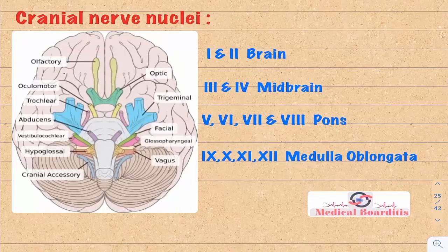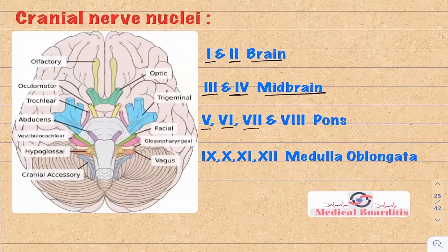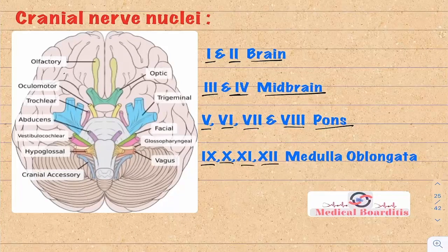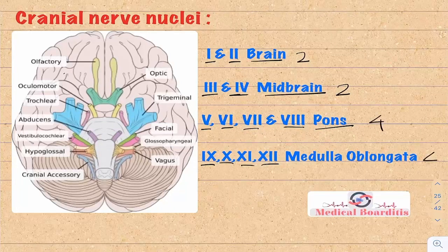Now briefly I'm going to discuss the cranial nerves. Cranial nerves 1 and 2 come off the brain directly. Cranial nerves 3 and 4 come off the midbrain. Cranial nerves 5, 6, 7, and 8 come off the pons, and finally the medulla gives off cranial nerves 9, 10, 11, and 12. So two nerves come off the brain, two come off the midbrain, four come off the pons, and four come off the medulla oblongata.